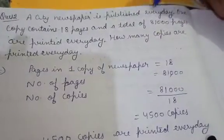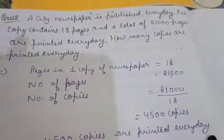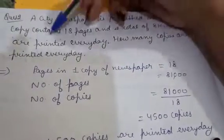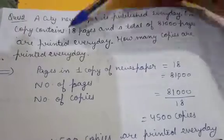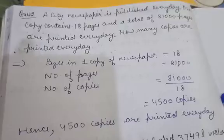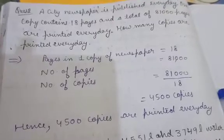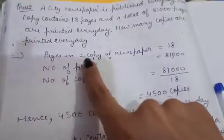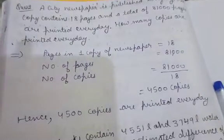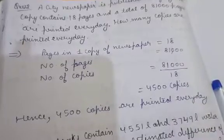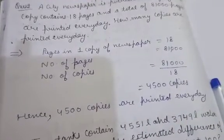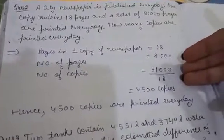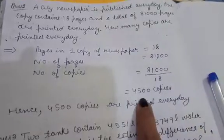Question number two: a city newspaper is published every day. One copy contains 18 pages and a total of eighty-one thousand pages are printed every day. How many copies are printed every day? We divide eighty-one thousand by 18 and we get 4500. So the number of copies printed every day is 4500.